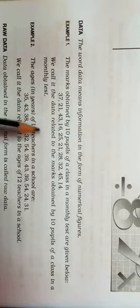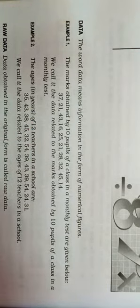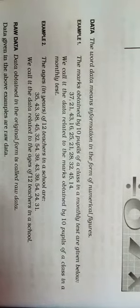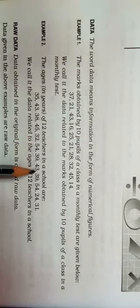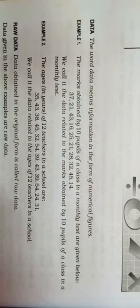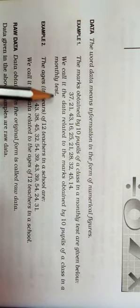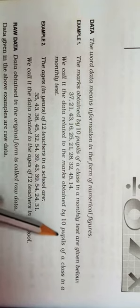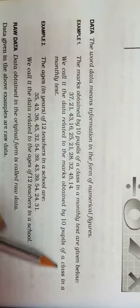For example number two, the ages of 12 teachers in a school are given as numerical figures. We can call this the data related to the ages of 12 teachers in a school. From the above examples, we can see that data is simply numerical information related to a particular context.